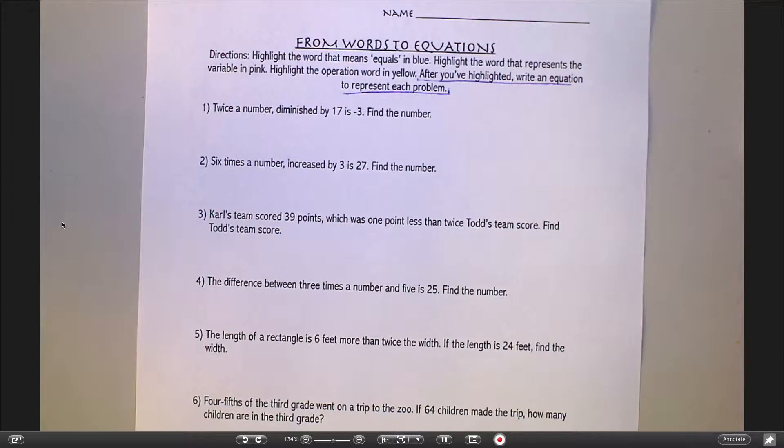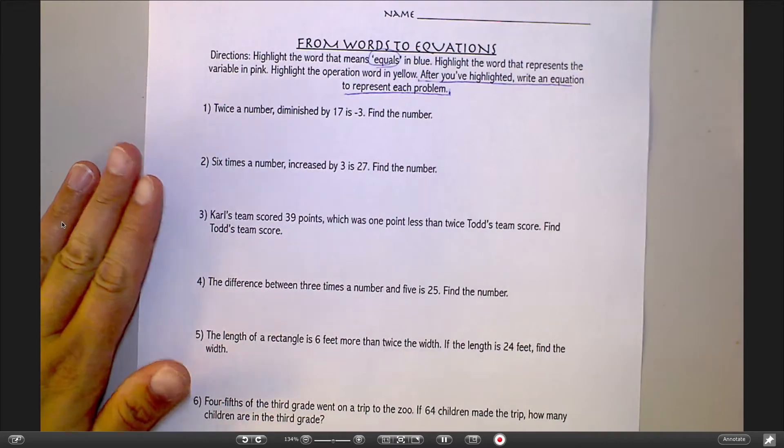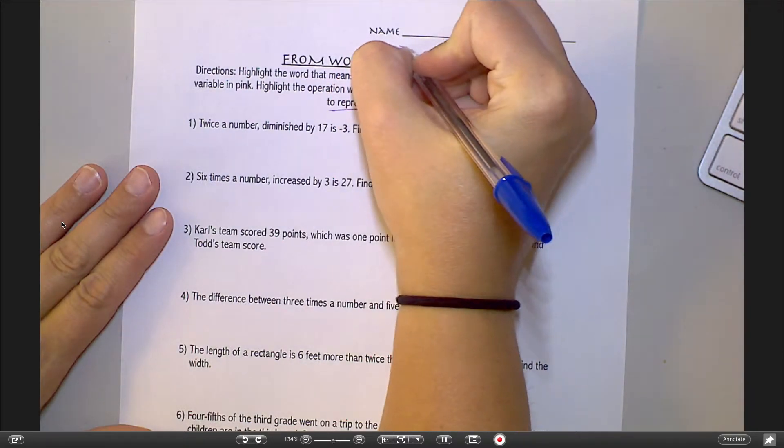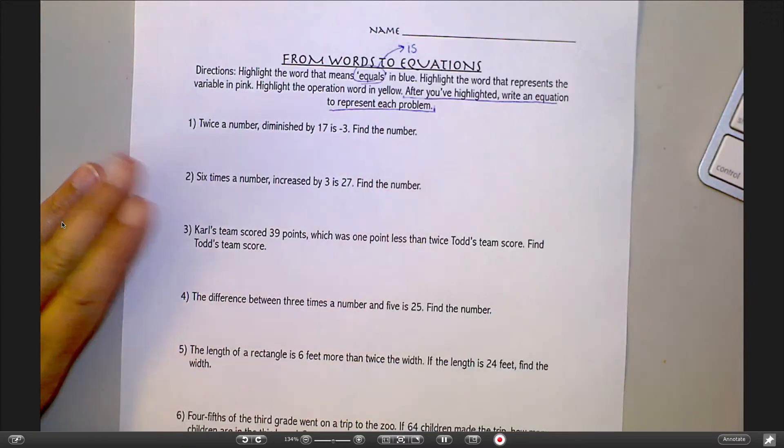One of your assignments for this week was to go on to the website called Lino It and work with your group and put together a list of operation words. Within that list, I asked you to come up with the word that means equals. I'm not sure if you were able to do that on your own because that's a tricky one. The word that means equals is always some variation of the word is.